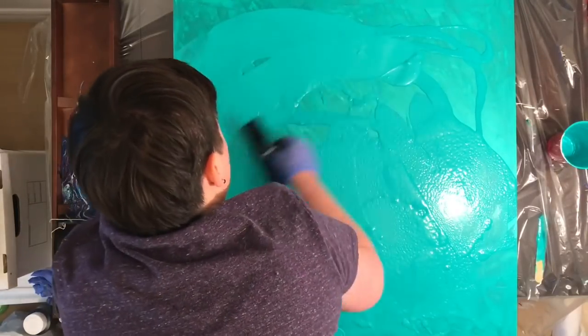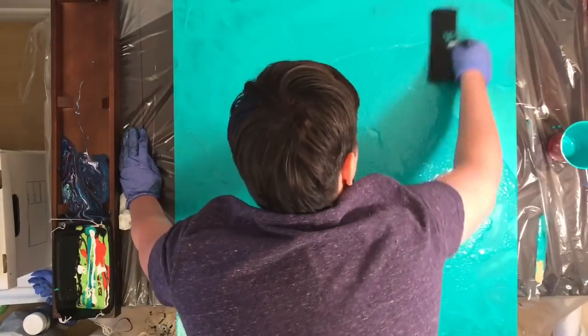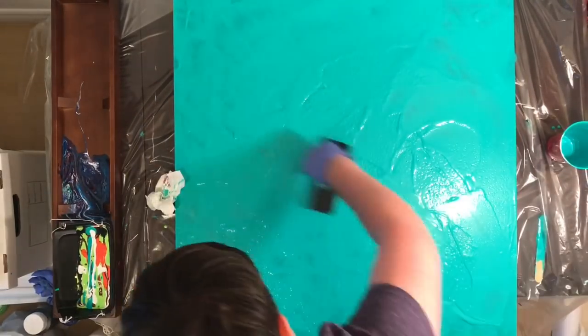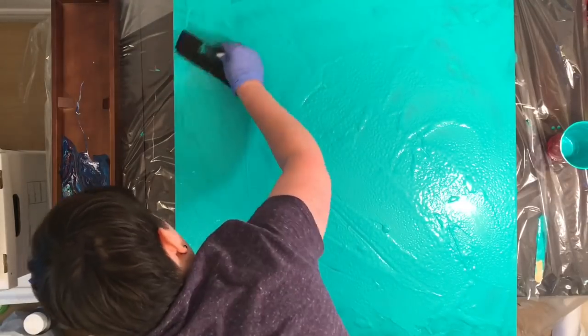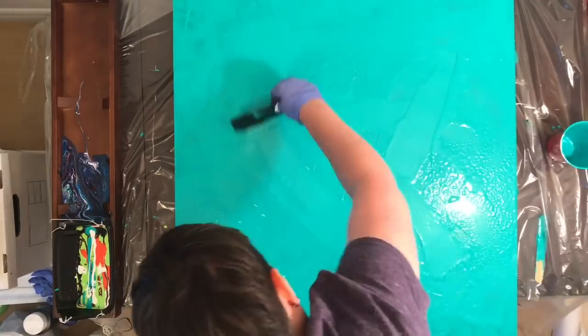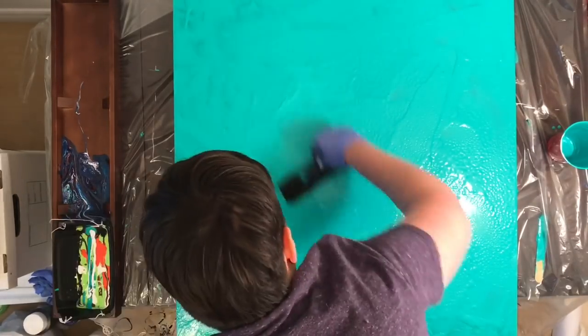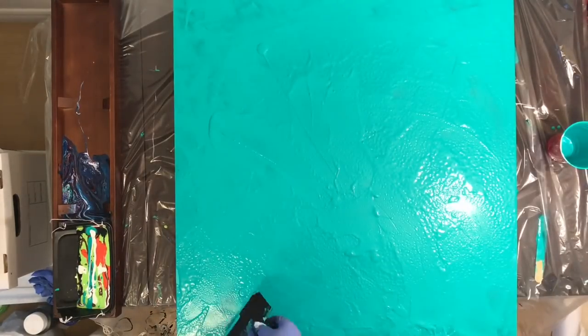I've really got to just purge all my cups and start fresh again so I don't have any more of this contamination. But the last time that this happened where my negative space background was contaminated with silicone, it dried okay, so I'm not too worried about it this time.